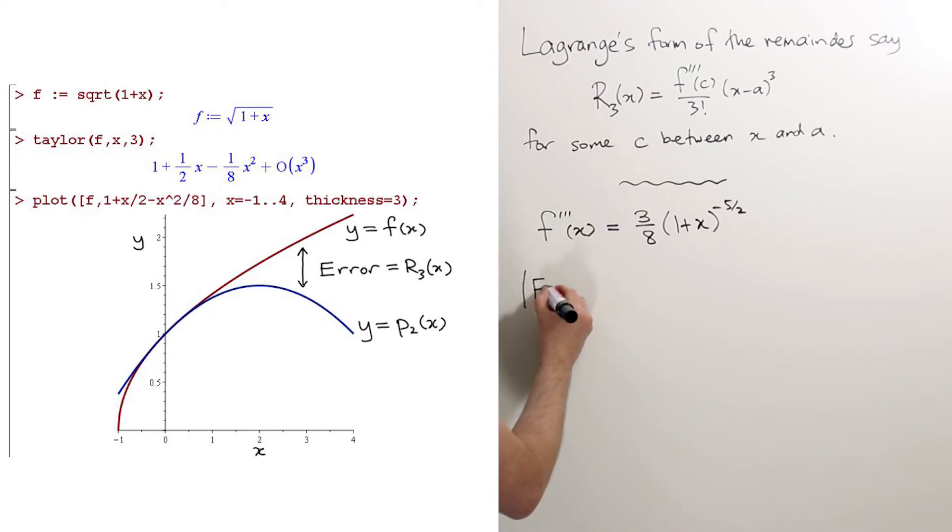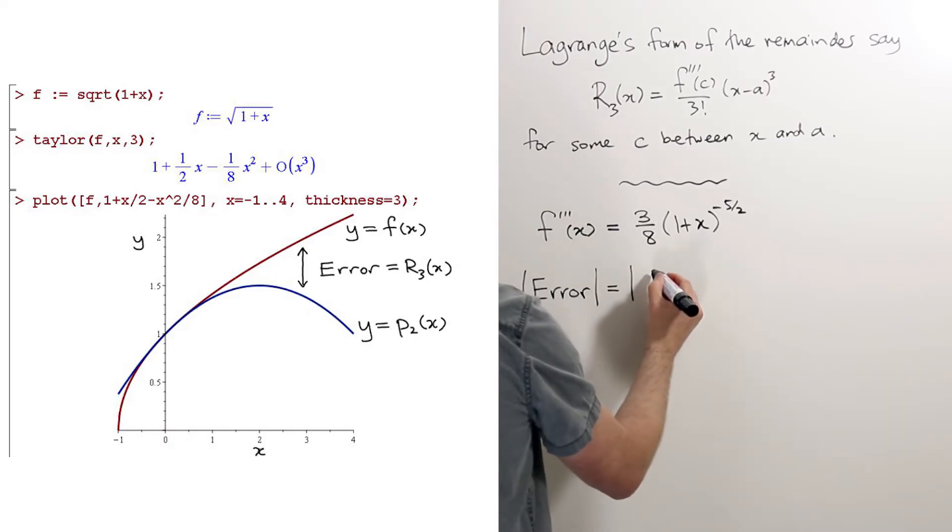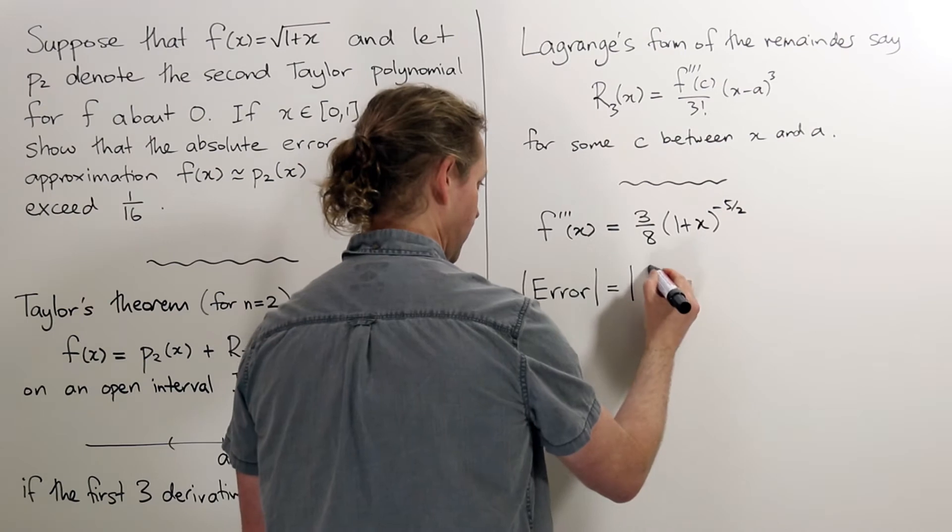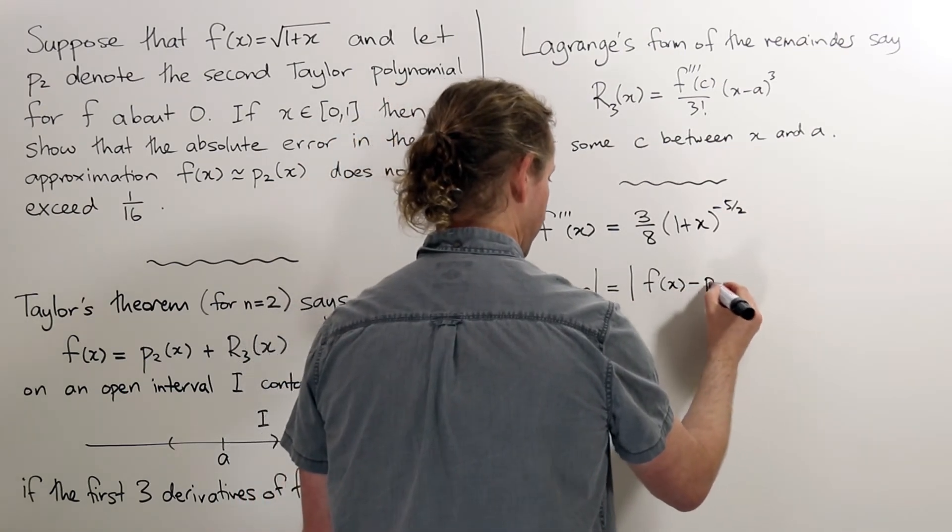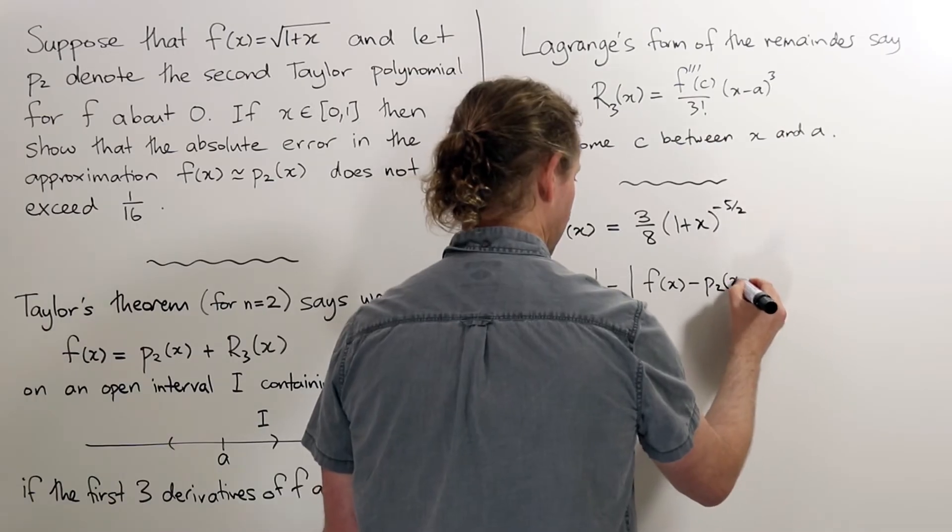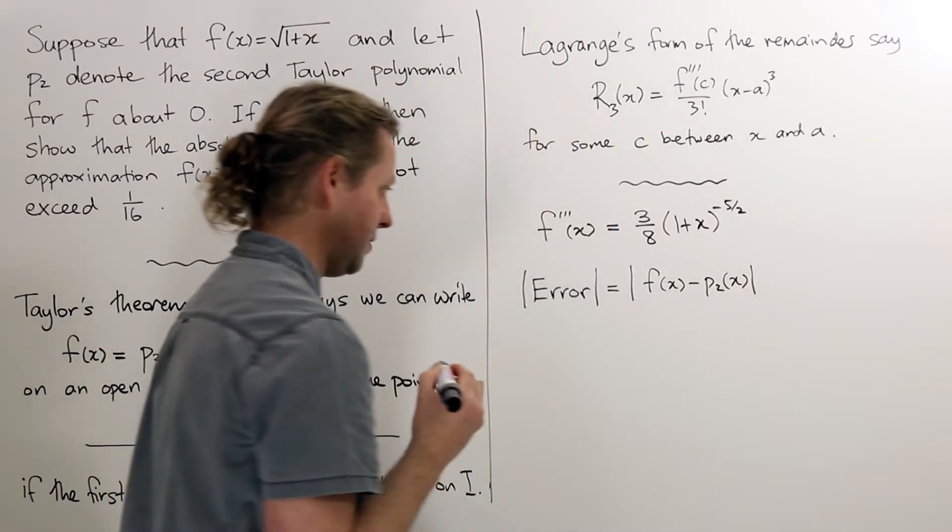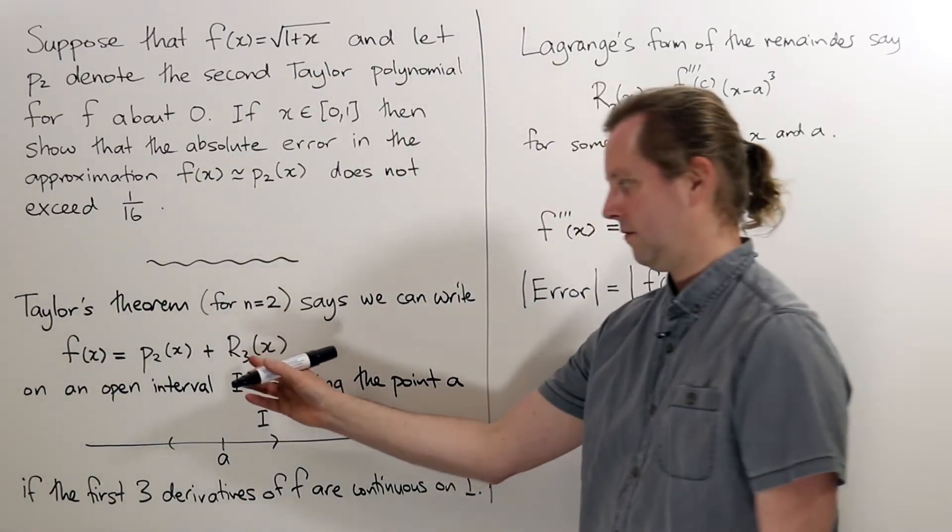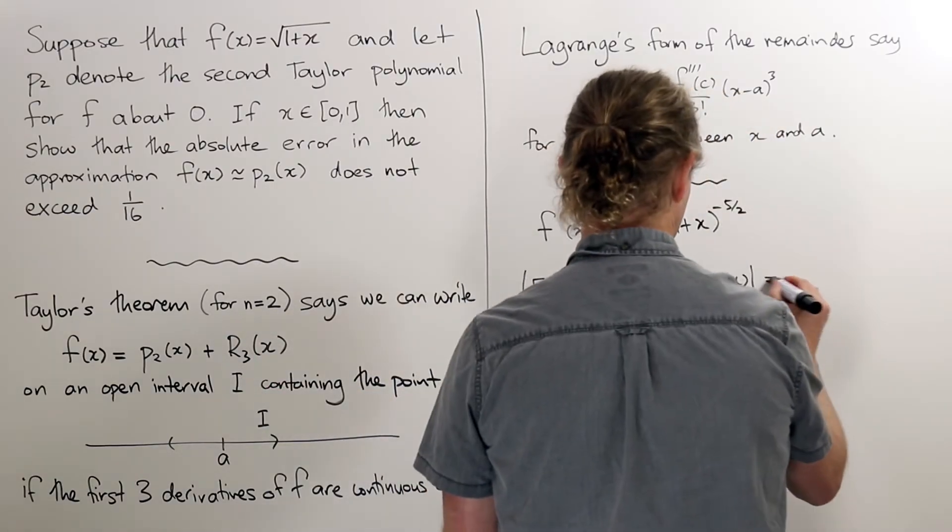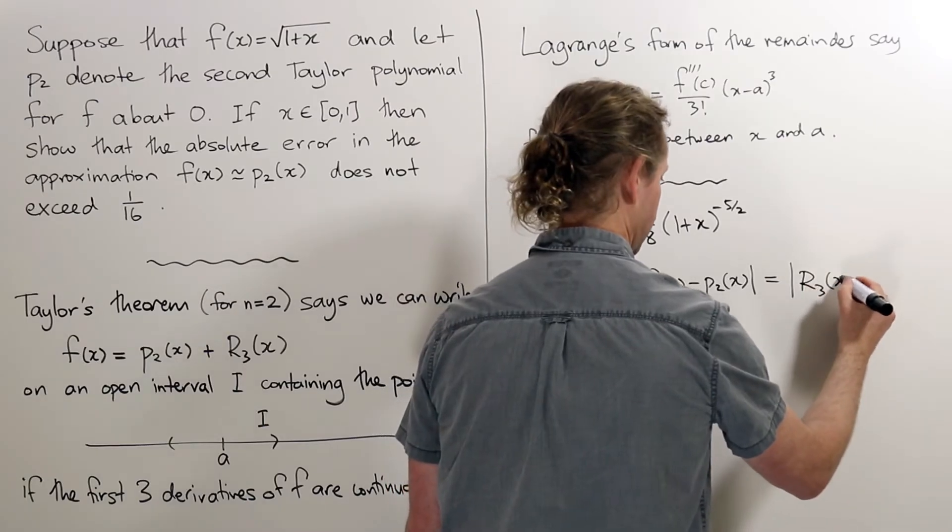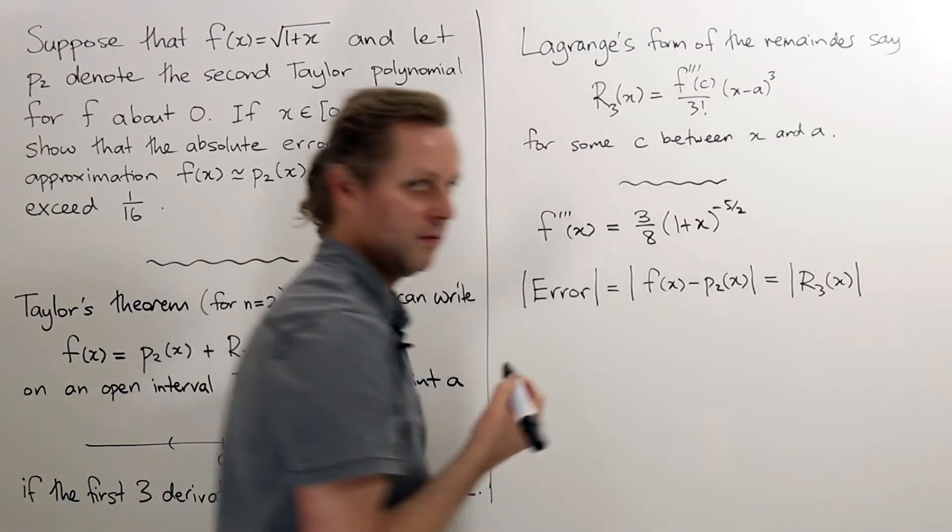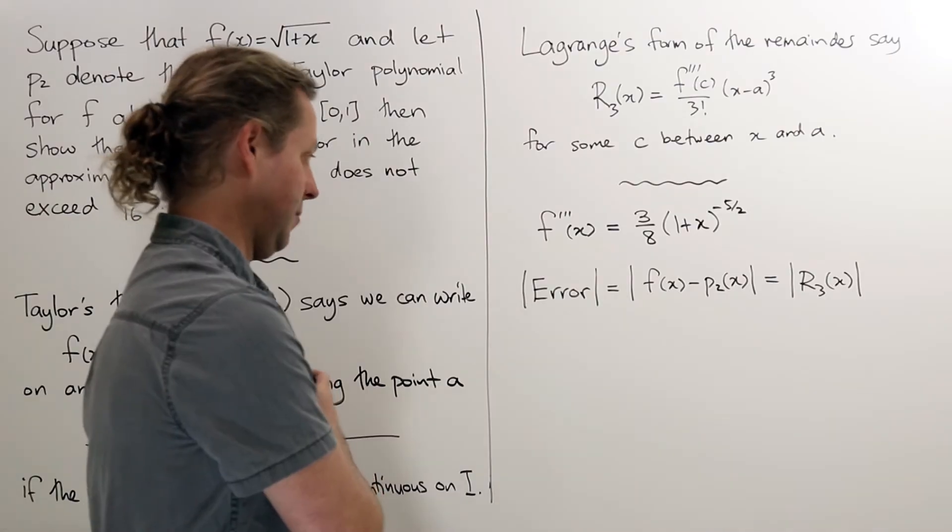So the magnitude or the absolute value of the error is the absolute value of f(x) minus p2(x), but f(x) minus p2(x) is of course just r3(x). So this is the absolute value of r3(x), and so this is what we want to calculate and see how big that might be.